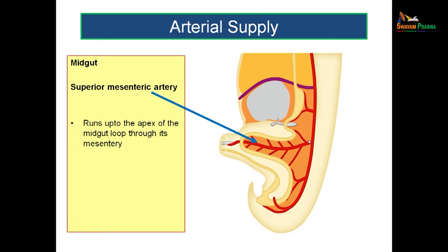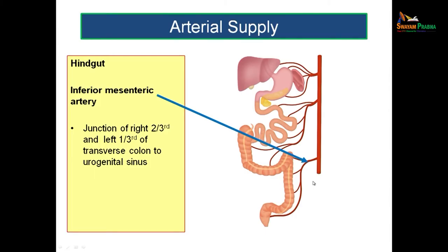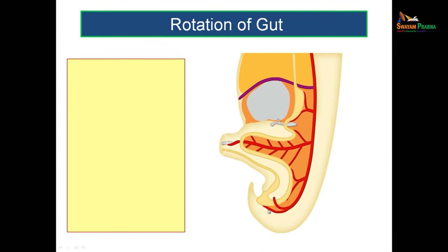The superior mesenteric artery runs towards the apex of the loop of the midgut through the mesentery from the posterior aspect, dividing the midgut loop into a proximal segment and a distal segment. The hindgut is supplied by the inferior mesenteric artery — the third major artery arising from the abdominal aorta. This supplies the left one-third of the transverse colon, the descending colon, the sigmoid colon, the rectum, and the anal canal. All these are supplied by the inferior mesenteric artery.